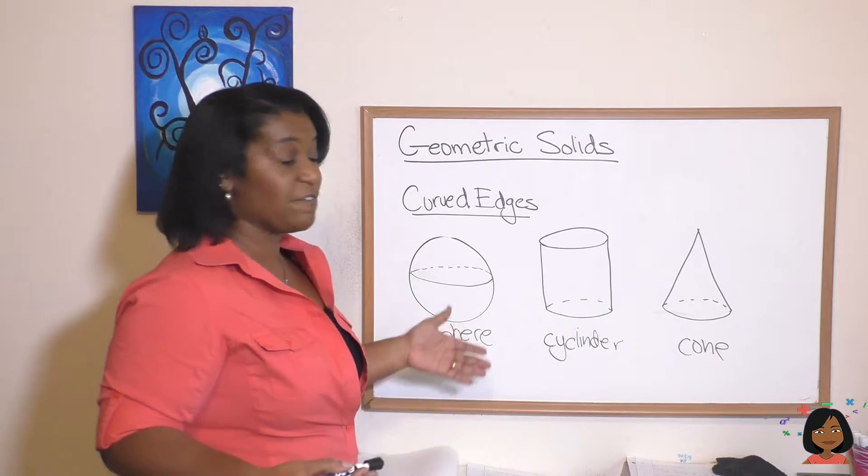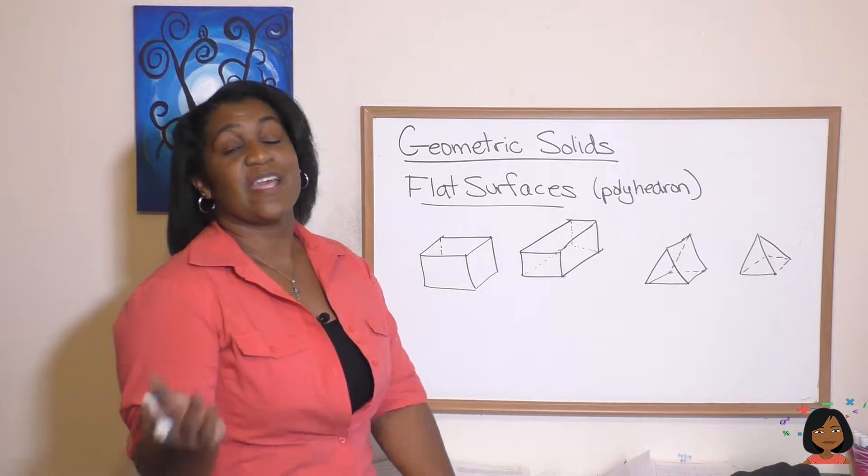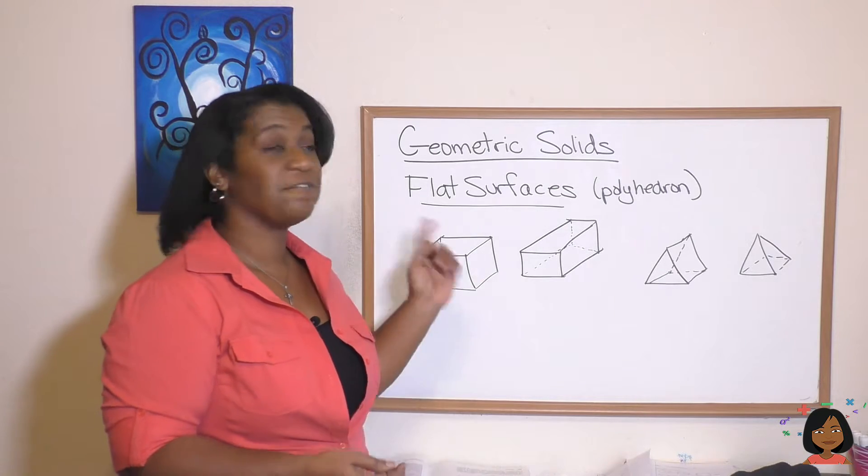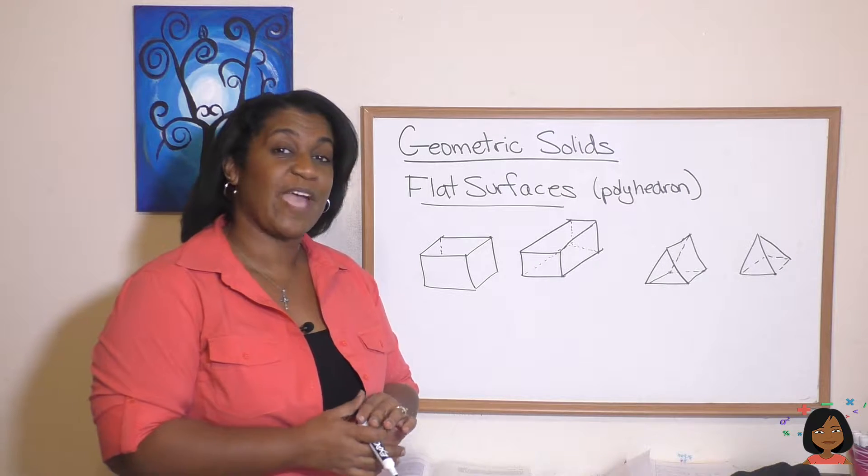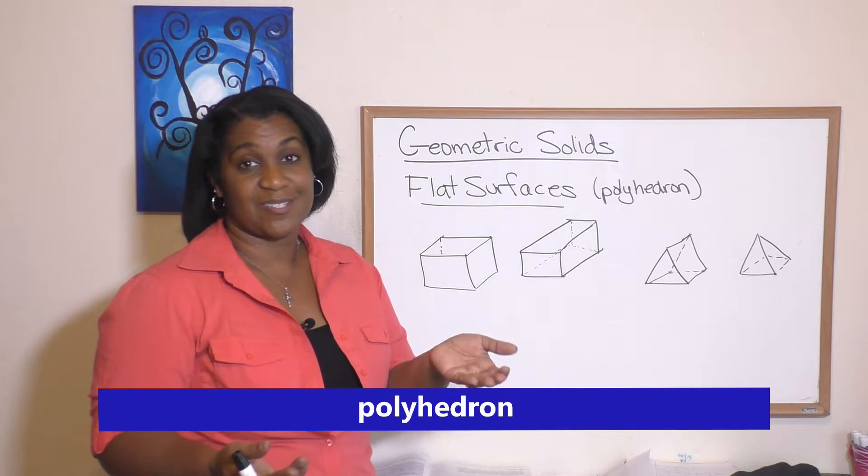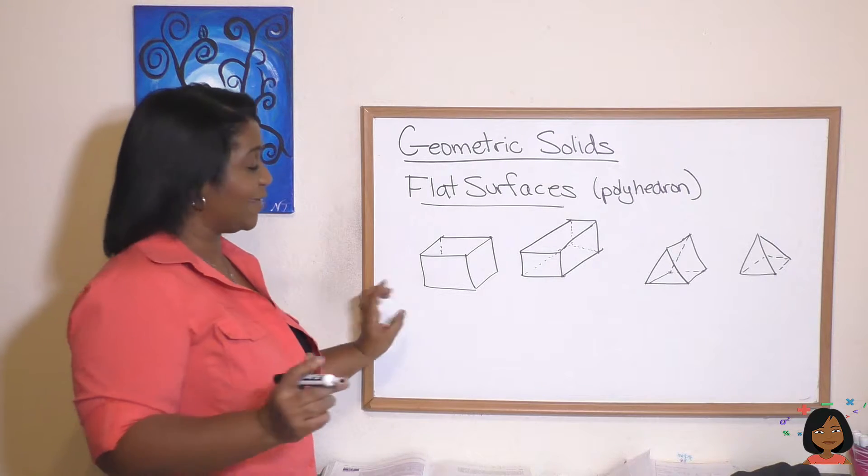Let me introduce you to a few more shapes. These are all shapes that have flat surfaces, which means there are no curved angles in these shapes. Another name we have for them is called polyhedrons. You might know this as a cube, right? It's based off of a square.